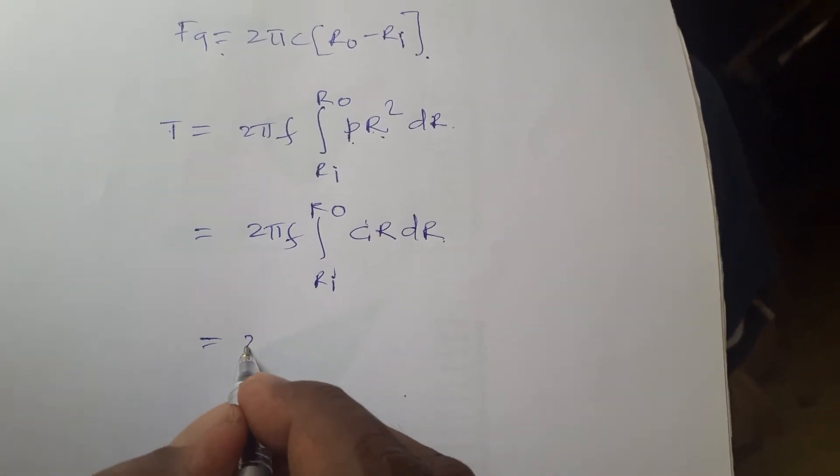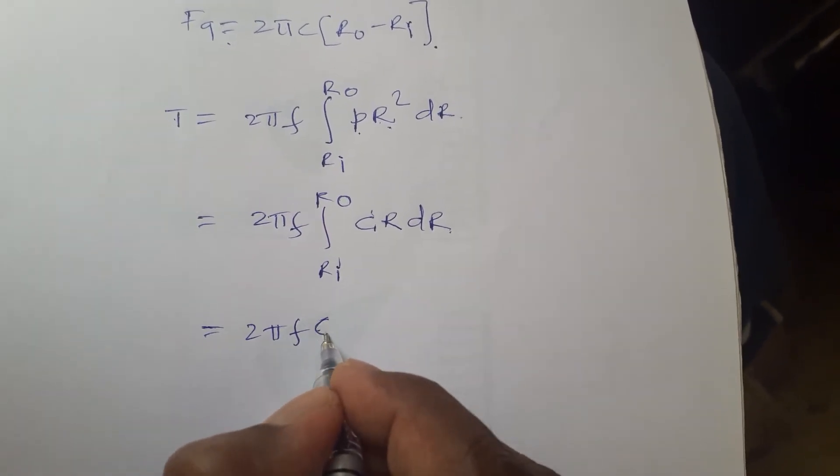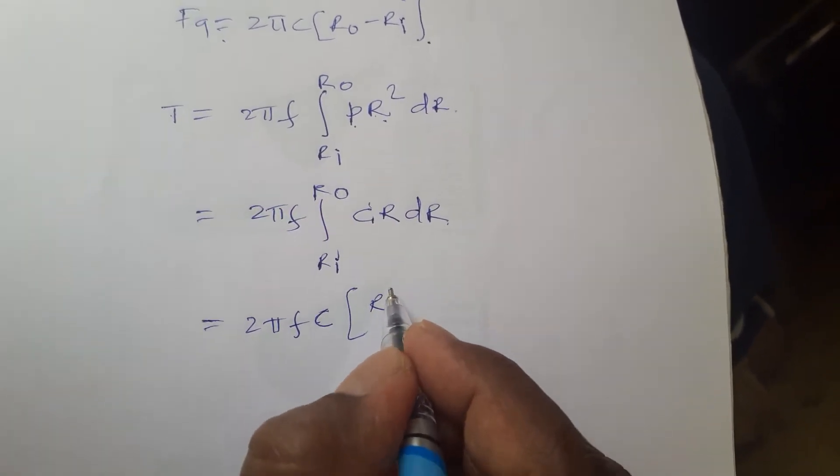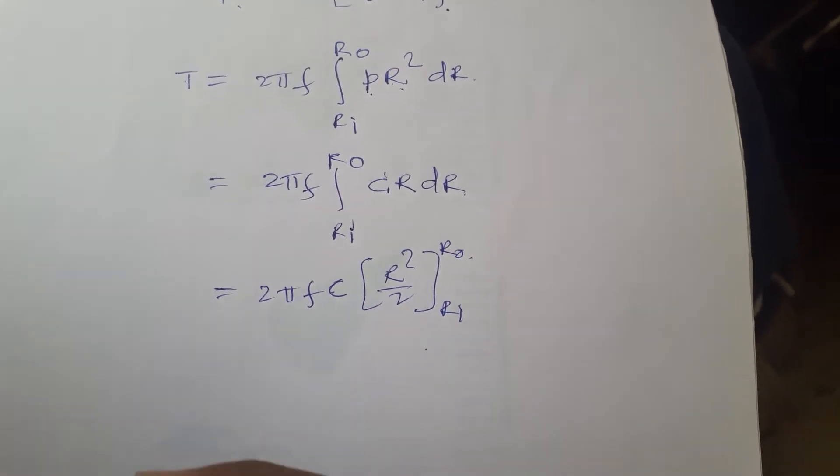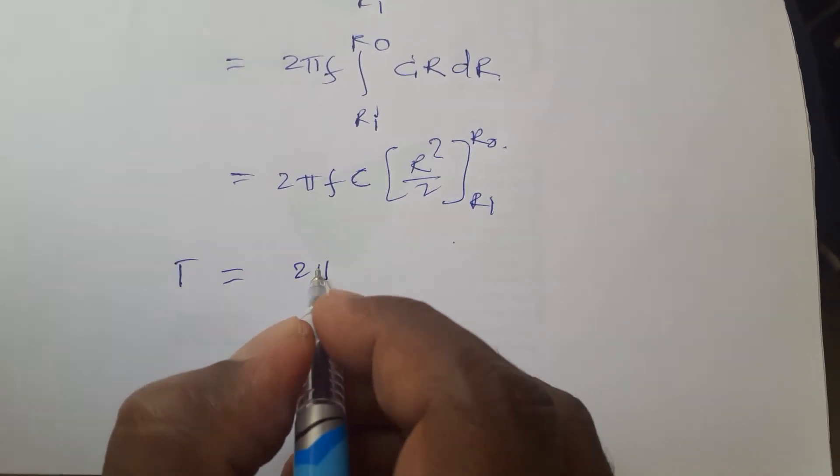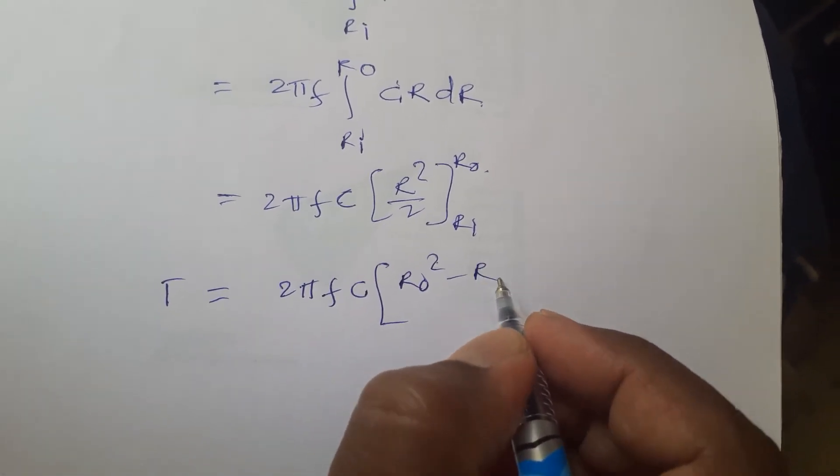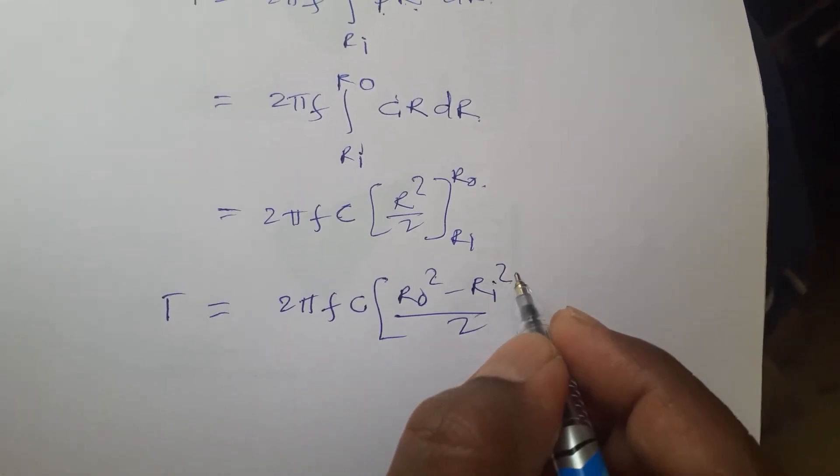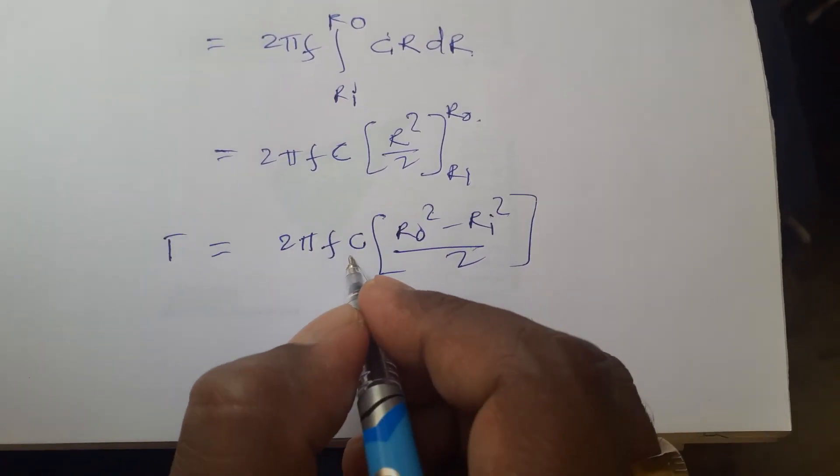So this, if you integrate, this will be 2 pi F, C. 2 pi F, C, R square by 2, Ri, R out. Now when you substitute this, torque is equals to 2 pi F, C, R out square minus Ri square divided by 2. We have to substitute the value of this C now.